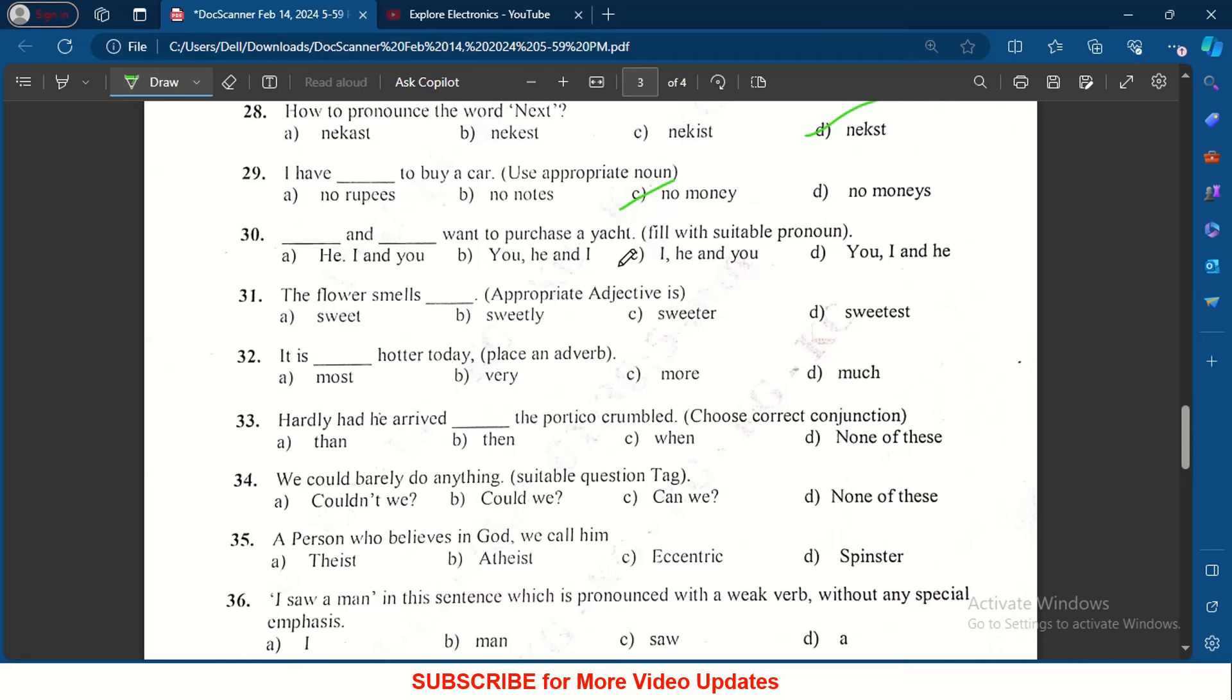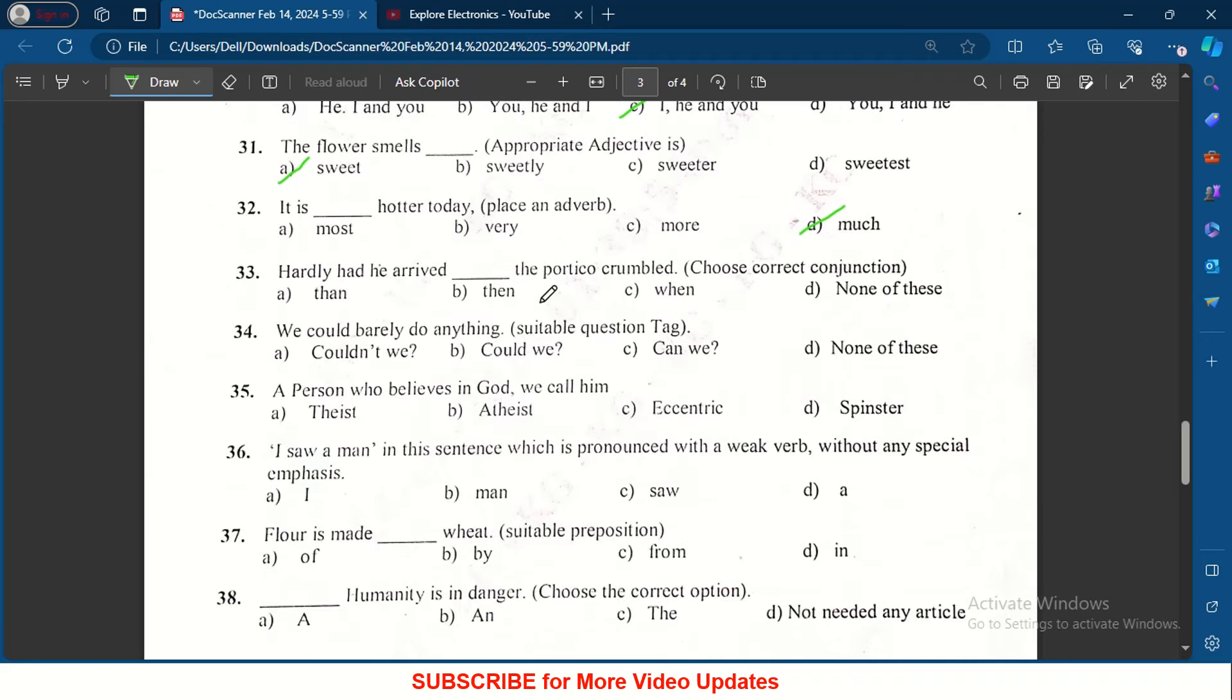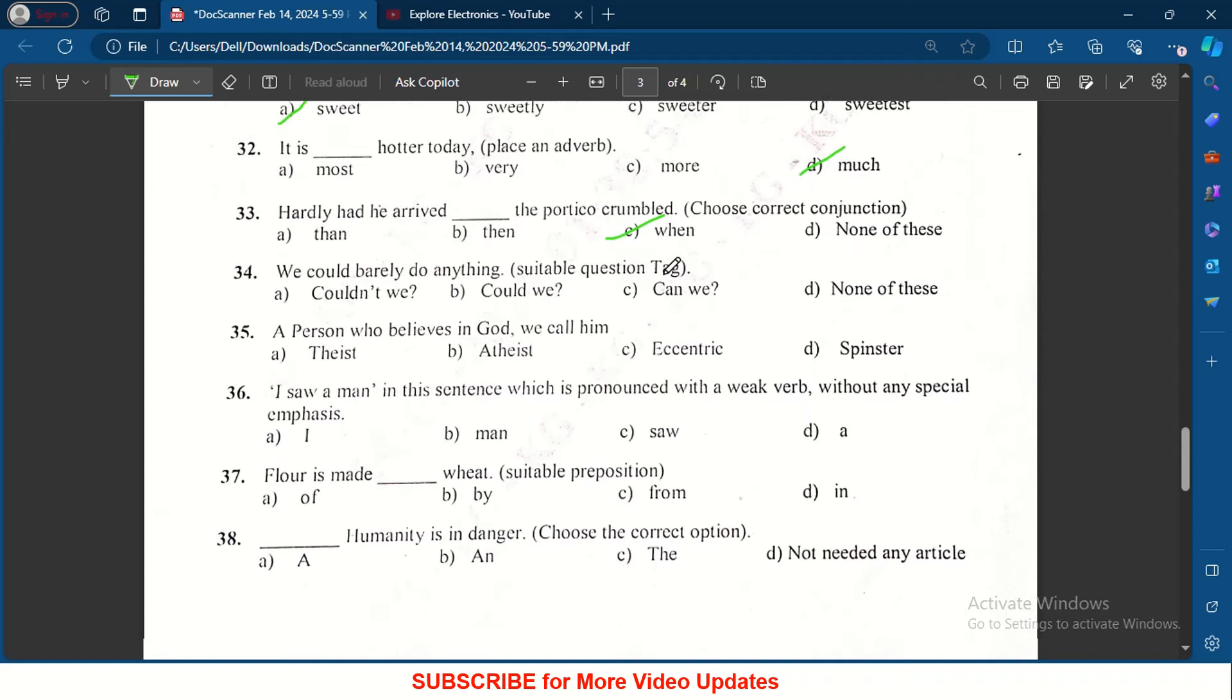The flower smells dash - sweet dash. It is dash hotter today: most, very, more, much. Much hotter today. Hardly had he arrived dash - the portico crumbled. So when is the answer for this, when the portico crumbled.